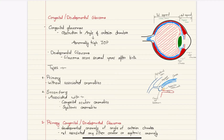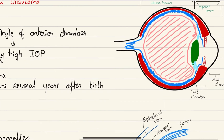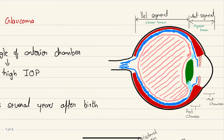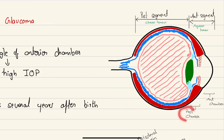Hello everyone, this video is about congenital or developmental glaucoma. But before moving on to glaucoma, let's revise some structures of the eyeball. The eyeball is divided into two segments: the anterior segment and the posterior segment. In front of the lens is the anterior segment and behind the lens is the posterior segment. The anterior segment is further divided into two chambers — the posterior chamber is between the lens and the iris.